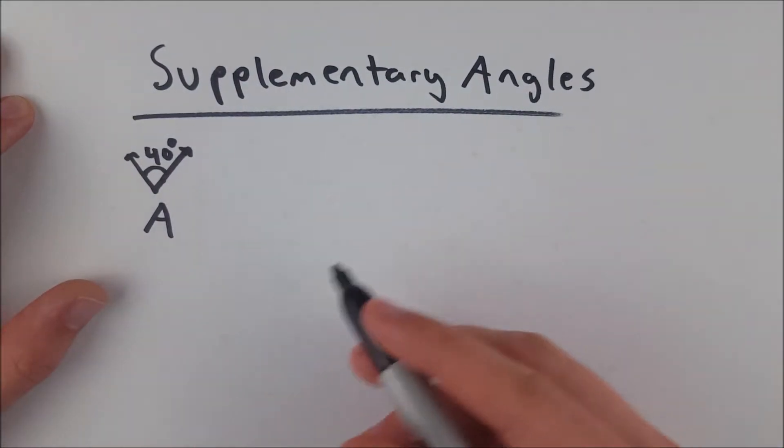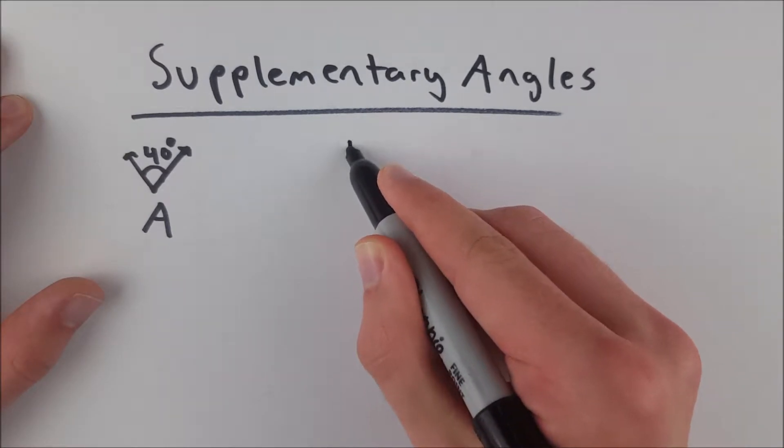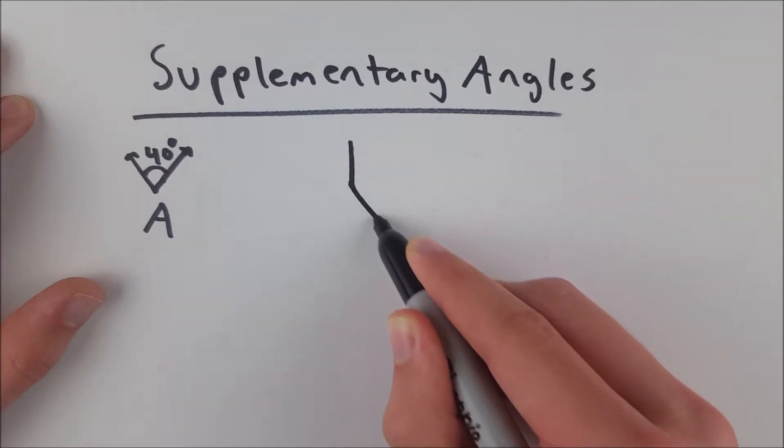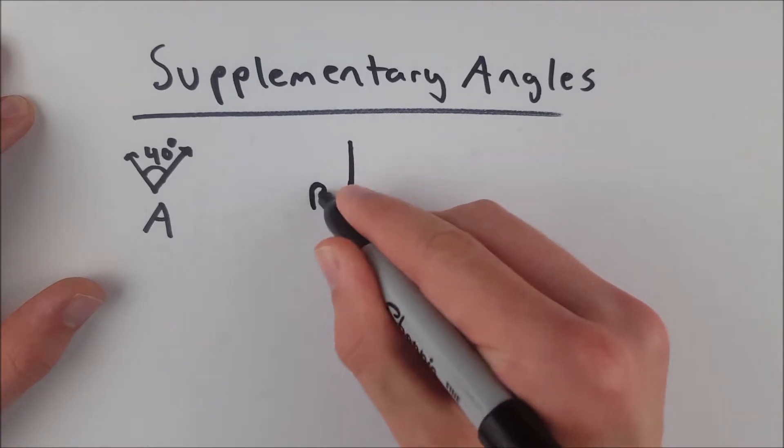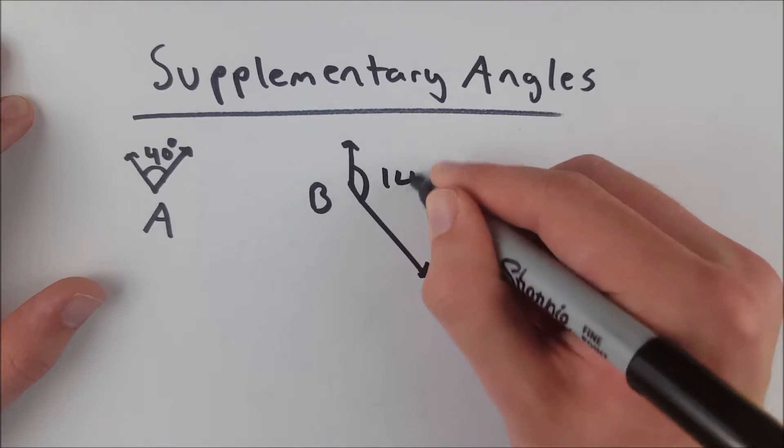then A's supplement would be angle B. Maybe angle B looks something like this. And here's angle B, it's big, it's obtuse, and it has a measure of 140 degrees.